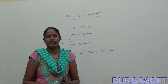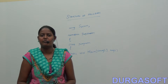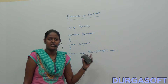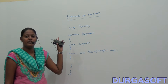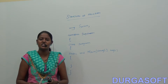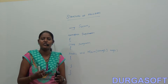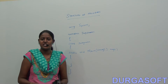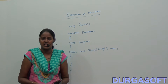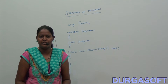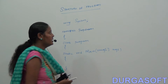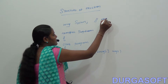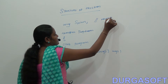Let us see what is the structure of a program. First of all, we have 'using system'. We are going to import the namespace. What is this namespace? Namespace is nothing but a collection of predefined classes and methods. Here, 'using system' — we call it as namespace.